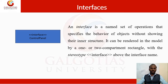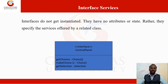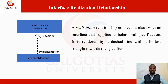Interface services do not get initiated — they don't have any attribute or state. Rather, they specify the services offered by the realizing classes. Unlike a class diagram which is divided into three compartments (class name, attribute, and operation), interface services take two compartments: the first is the interface name and the second is the operation. This tells in detail why a particular communication is held between two different objects.